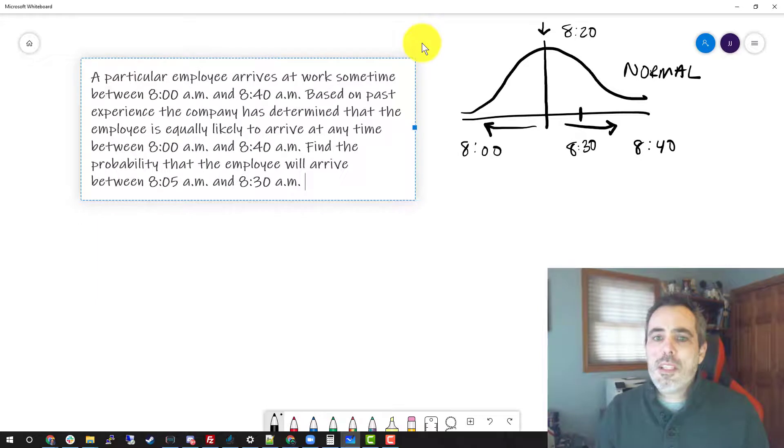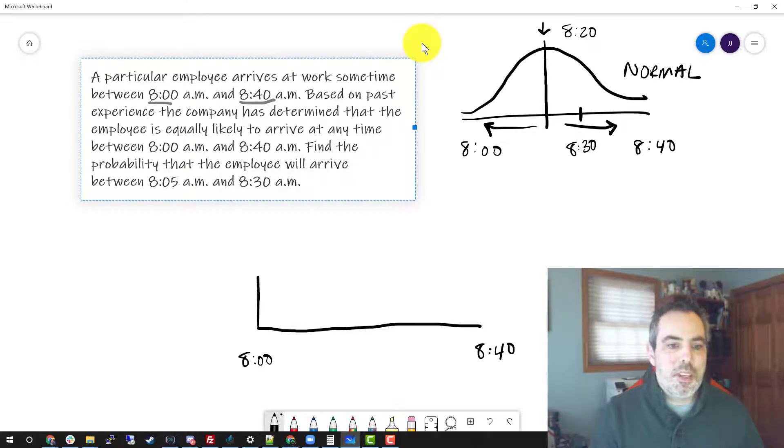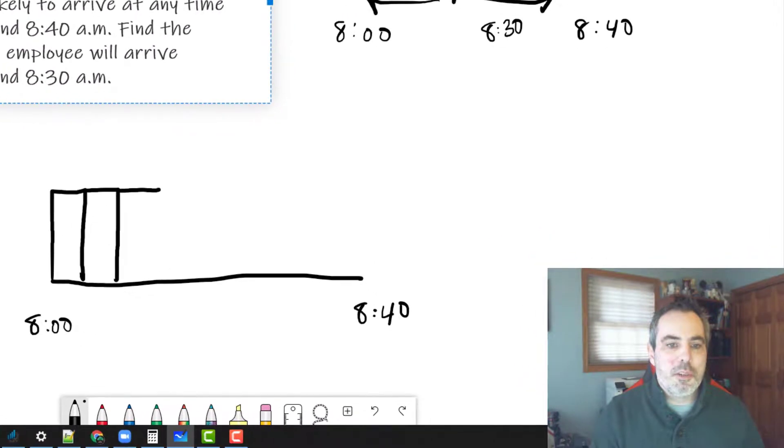We're going to start with something easier and say what if this was uniform? In a uniform distribution, we would have between 8 o'clock and 8:40. Based on past experience, the company has determined that the employee is equally likely to arrive at any time between 8 o'clock and 8:40. What that really means is, let's say this were 5 minute increments, he's equally likely at any point in time.